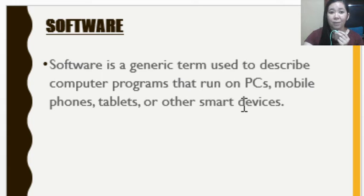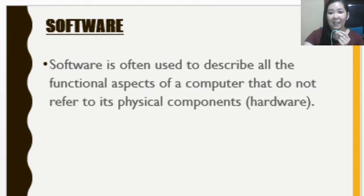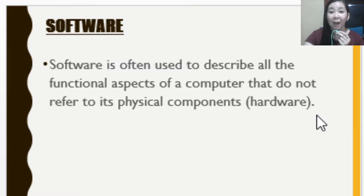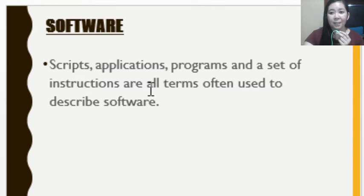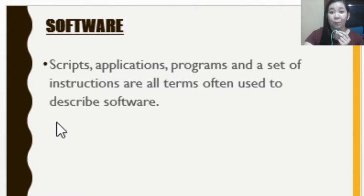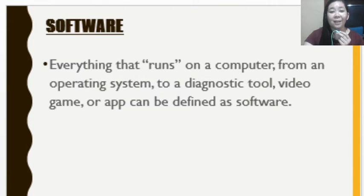Software runs on our personal computers, mobile phones, tablets, and other smart devices. It is often used to describe all functional aspects of the computer that do not refer to its physical components, which are referred to as hardware. Scripts, applications, programs, and sets of instructions are all terms used to describe software. Everything that runs on a computer — from an operating system to a diagnostic tool, video game, or app — can be defined as software.